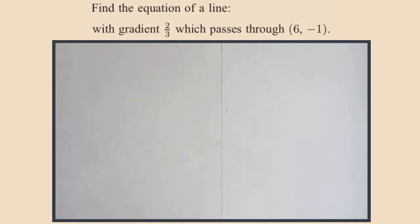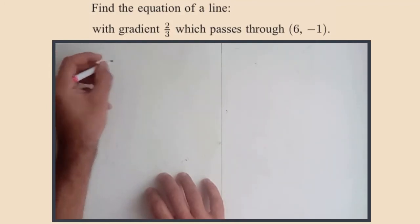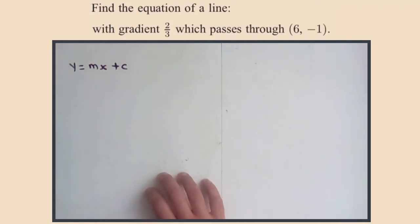But you do need to check that. So we know the equation of a straight line in the gradient intercept form is y equals mx plus c. It should really say it's a straight line, by the way, but it is y equals mx plus c.